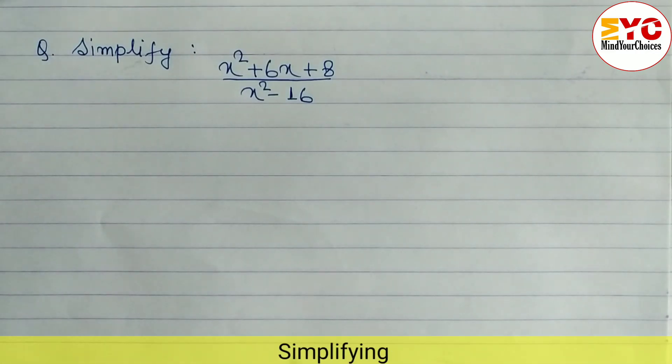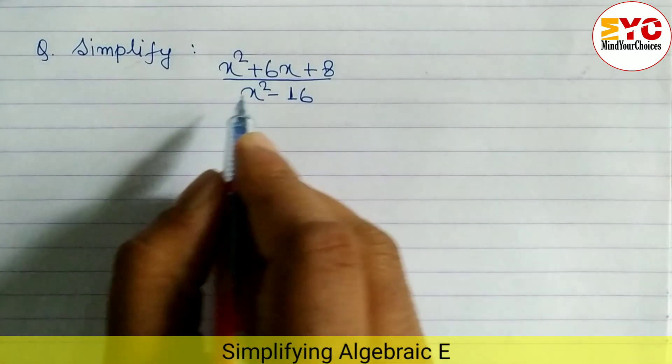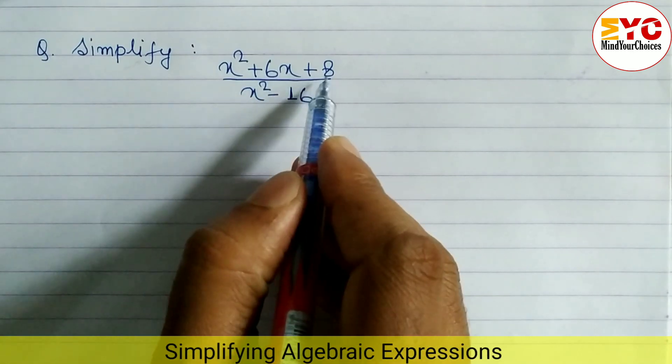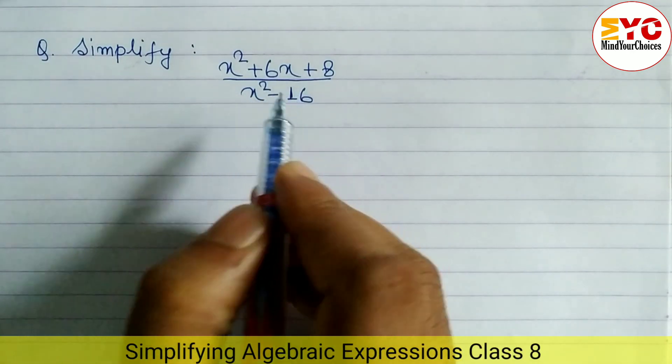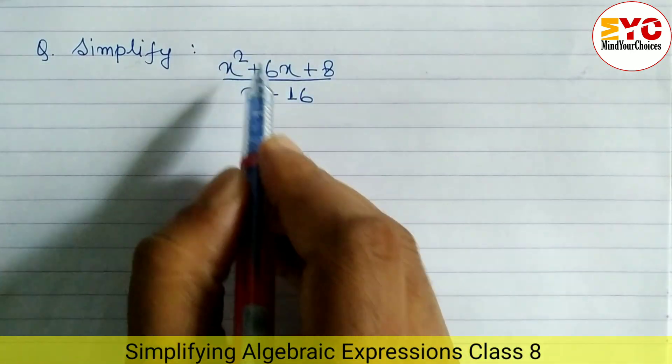In this video we will learn how to simplify an expression. You can see here x² + 6x + 8 over x² - 16. In the numerator first of all we have to factorize, and in the denominator we have to use a formula.